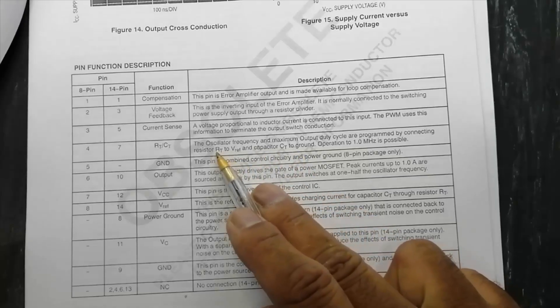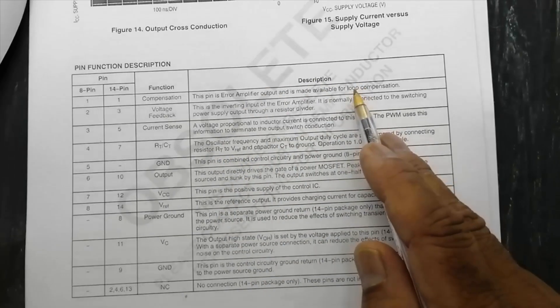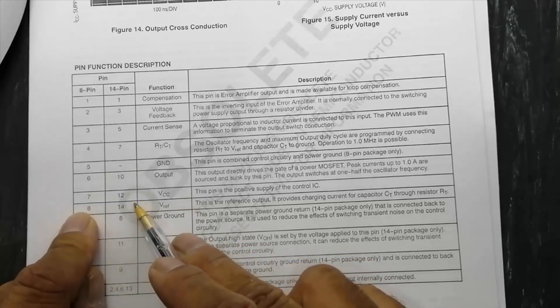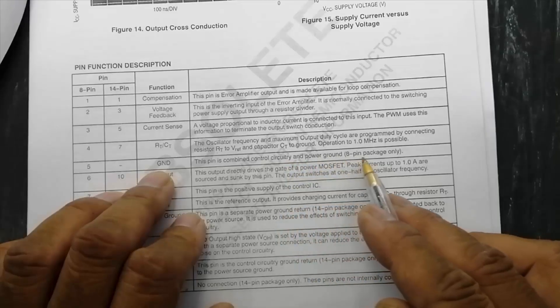So we need a resistor and capacitor. Capacitor will be grounded and RT will be connected to reference pin, V reference pin number 8 or 14. So we will see the circuit. Ground: this pin is combined control circuitry and power ground for 8-pin.